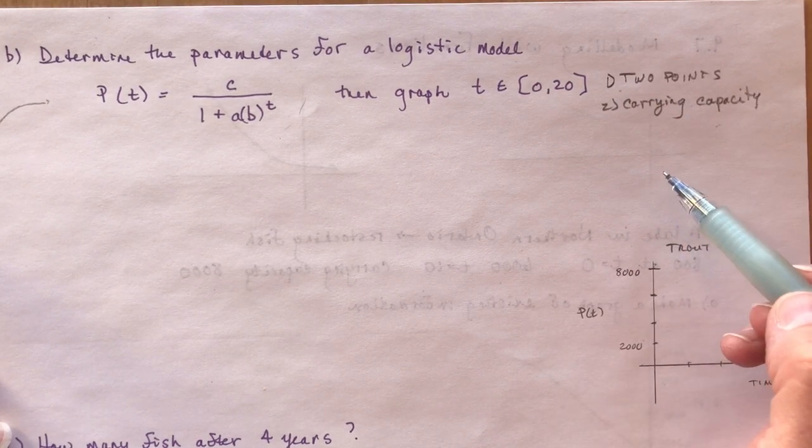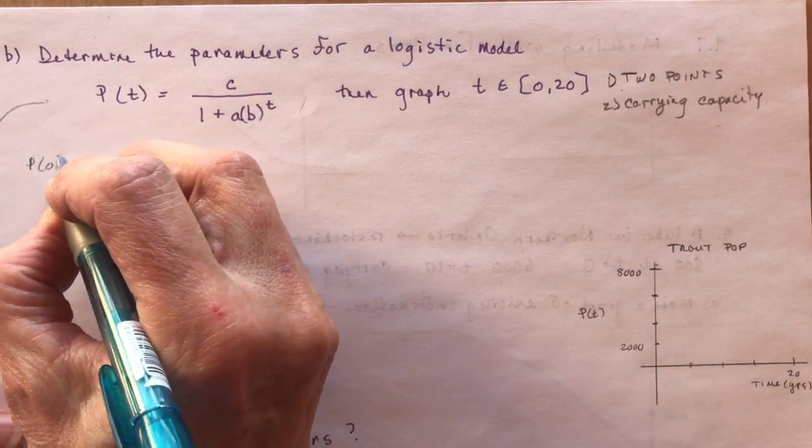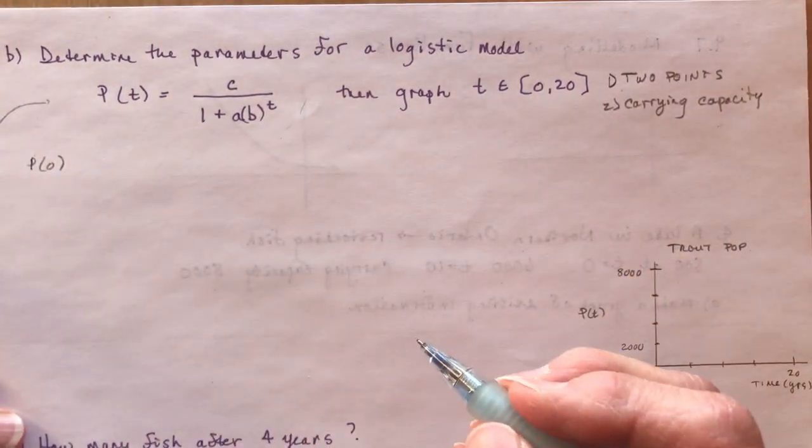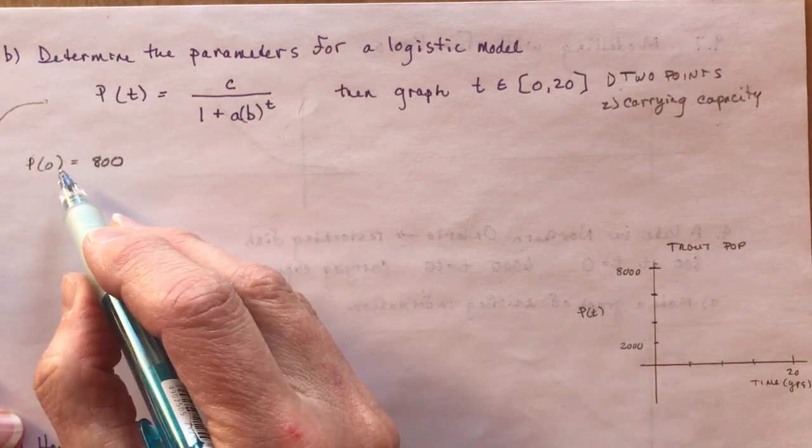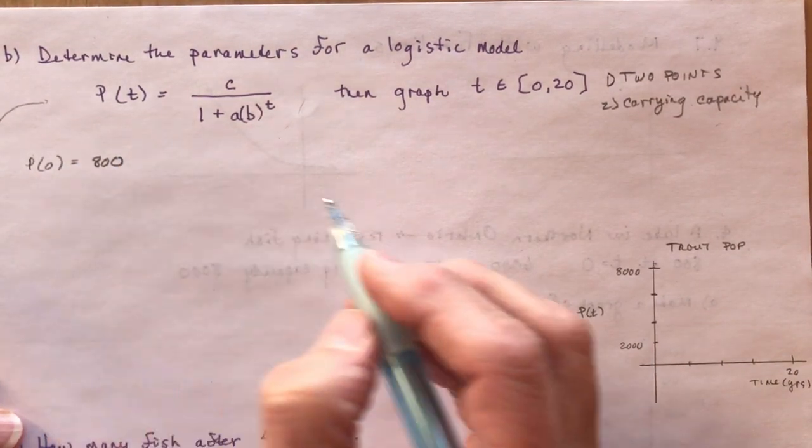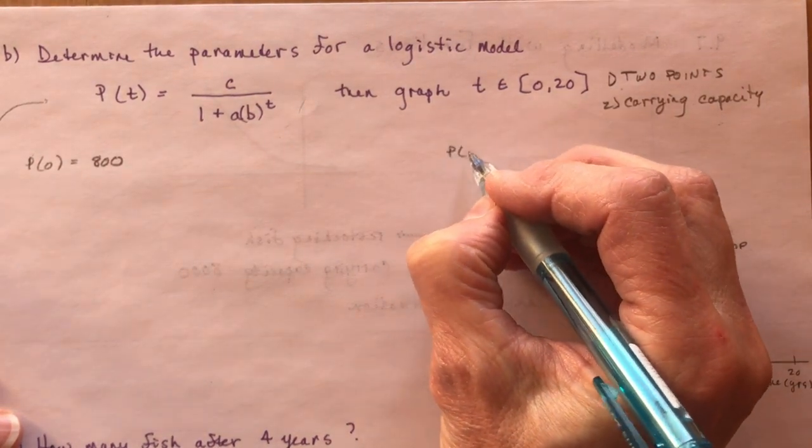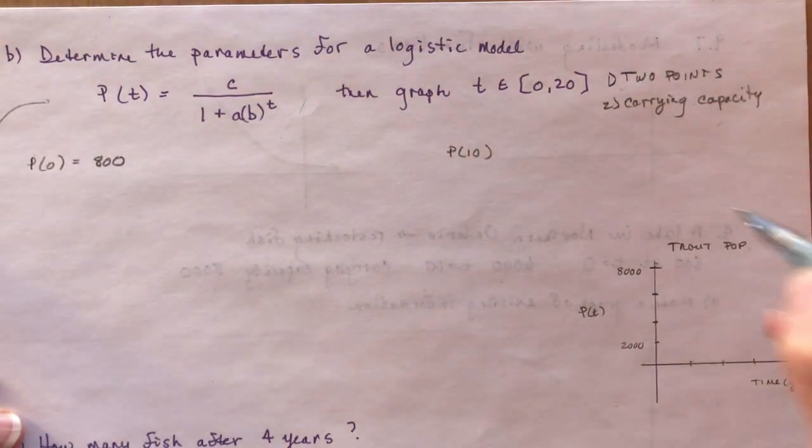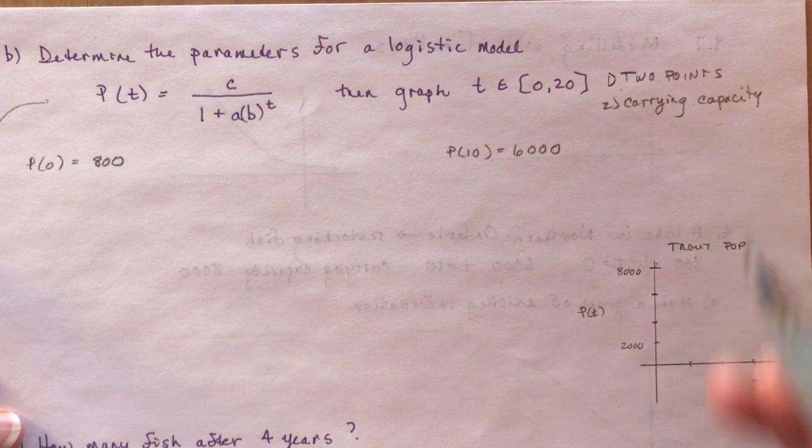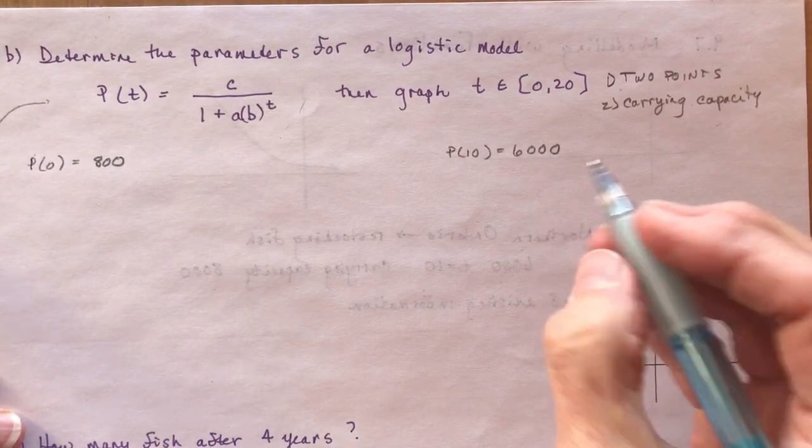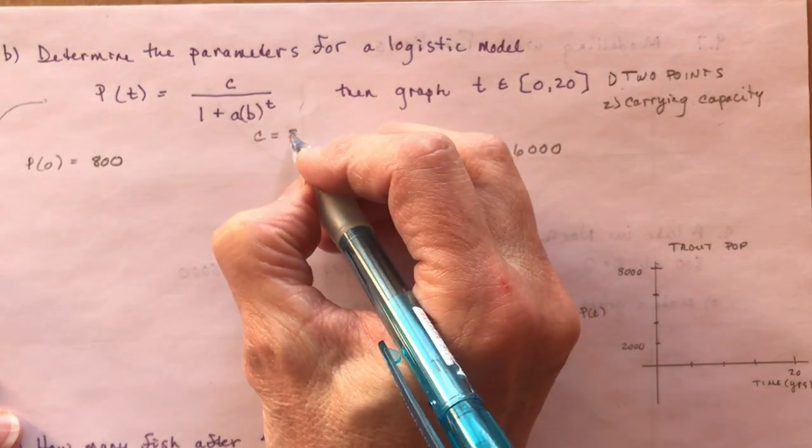So we need two points. And we do have two points. We had the point, the population at time zero, which was 800. So that meant that they put the 800 fish in at time zero. And we had another point, the population after 10 years, and that was 6,000. So these are given. And our C, the carrying capacity, is the maximum, which is 8,000.